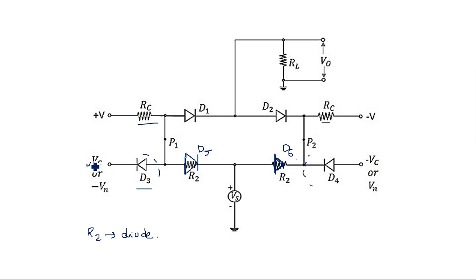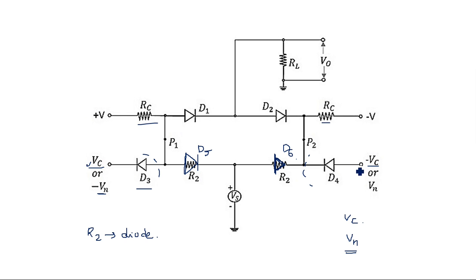The additional diodes D3 and D4 receive specific power supply connections. Diode D3 gets plus VC on the left and minus VC on the right hand side, while diode D4 gets plus VN on the right and minus VC on the left. So on the left hand side it is either plus VC or minus VN, and on the right hand side it is either minus VC or plus VN.